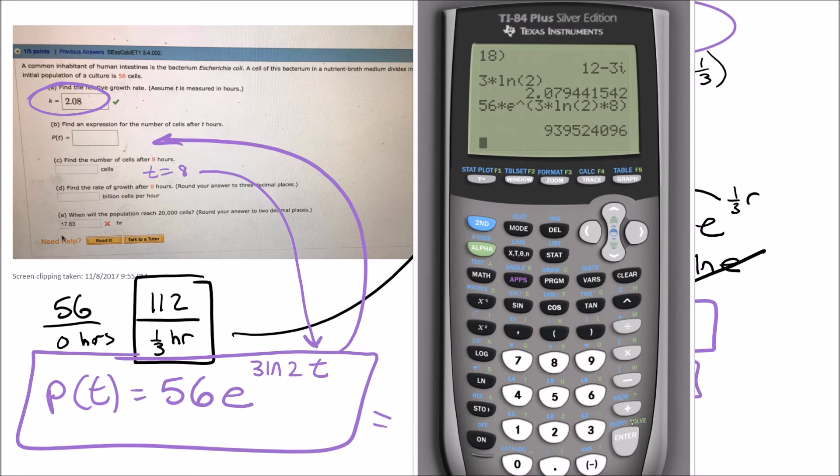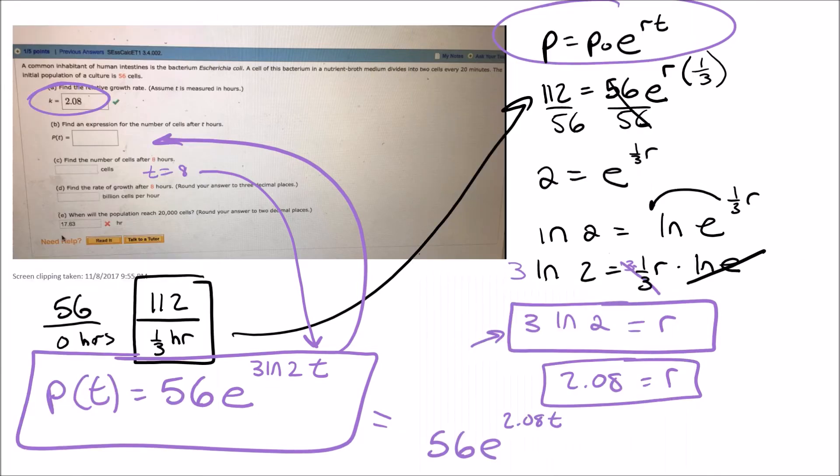And if I do that out, that's how many cells there are. That is a pretty large number. We'd copy that number over, and that was 939524096. So 939 million.